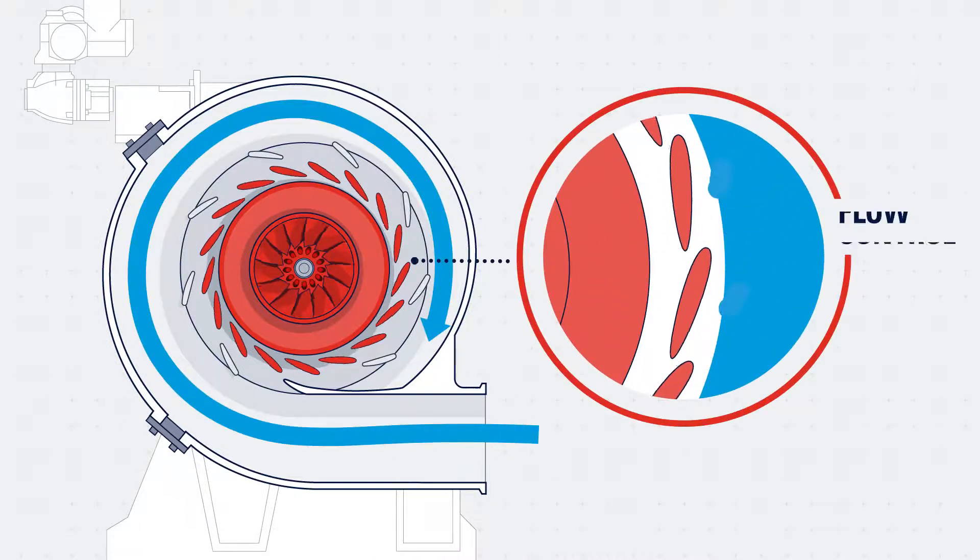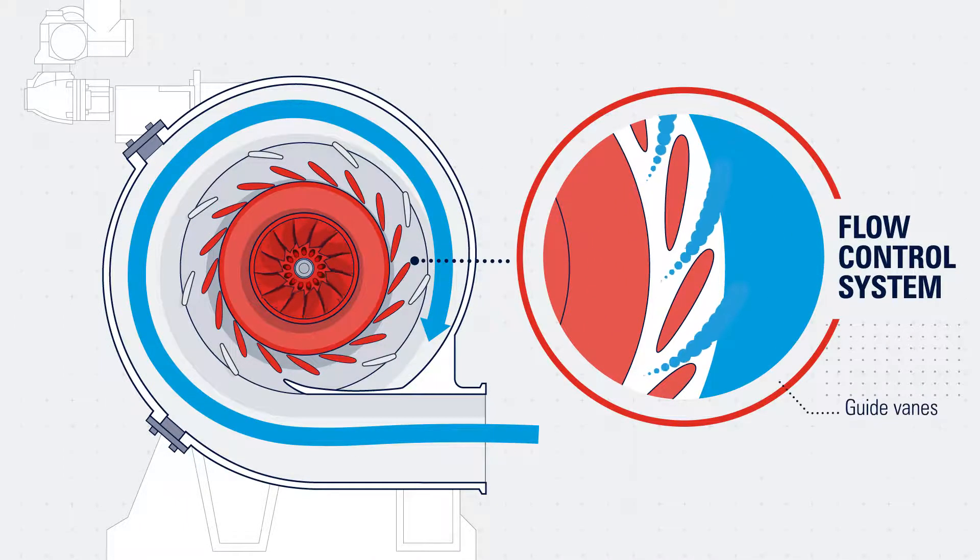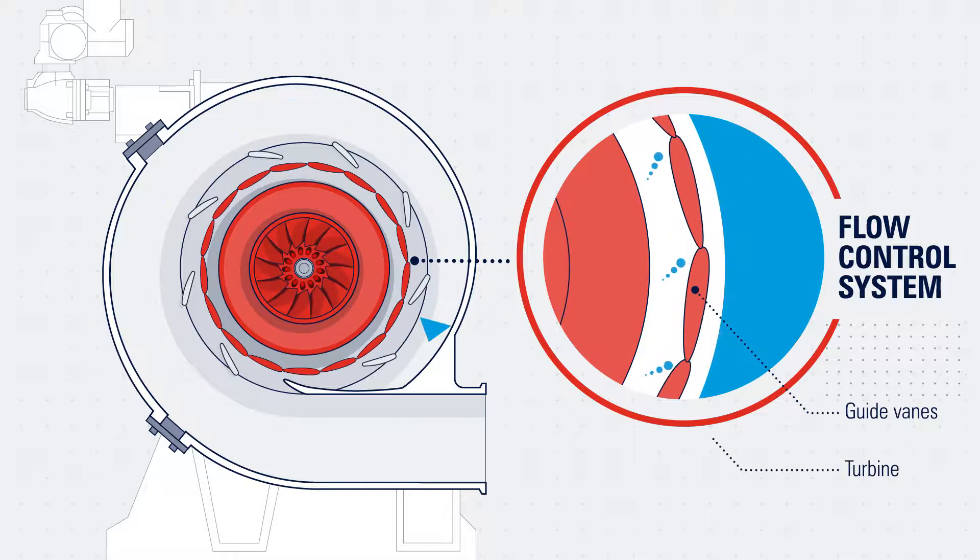One key feature is the flow control system that uses guide vanes to regulate the flow into the turbine, optimizing performance across a wider flow range.